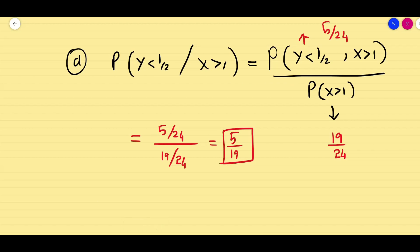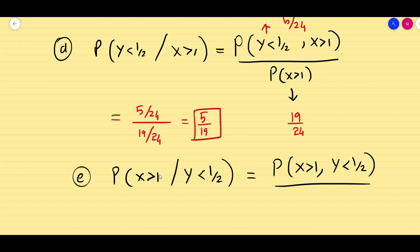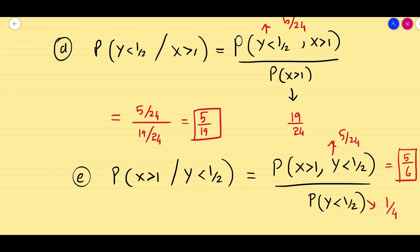As an additional question: what is P(X > 1 | Y < 1/2)? This can also be solved easily. It equals P(X > 1, Y < 1/2) divided by P(Y < 1/2). That is 5/24 divided by 1/4, giving 5/6. So this is very easy to solve — you just have to think and work through the problem.